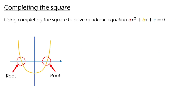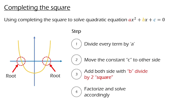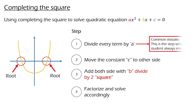I have listed down the general steps in solving the quadratic equation using completing the square. The first step is to divide every term by A — this is a step where most students will miss, so please take note. The second step is to move the constant C to the other side. The third step is to add both sides with (B divided by 2) squared. Finally, factorize and solve accordingly. Don't worry, I am going to discuss it in more detail later.